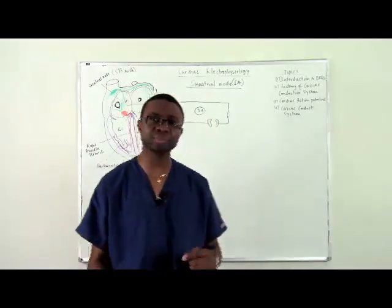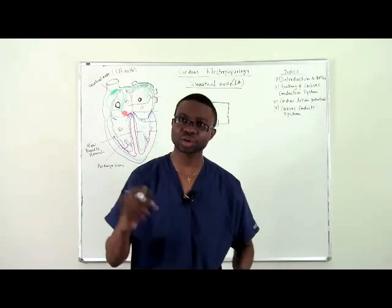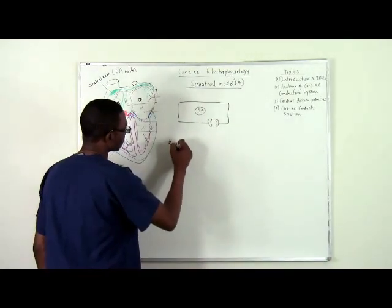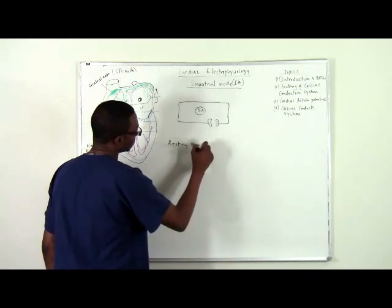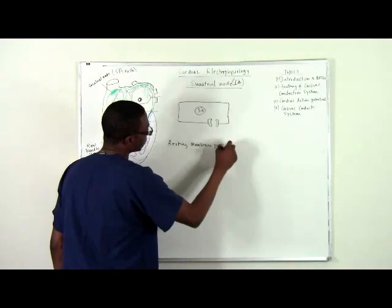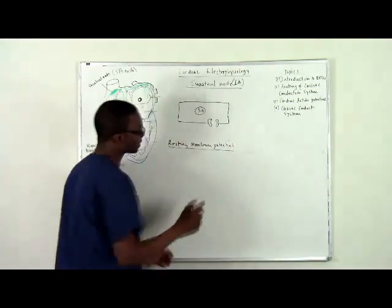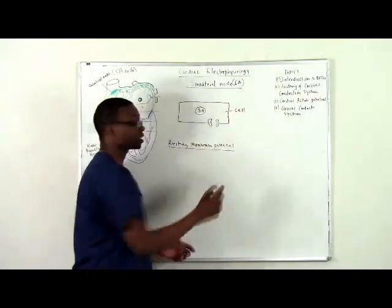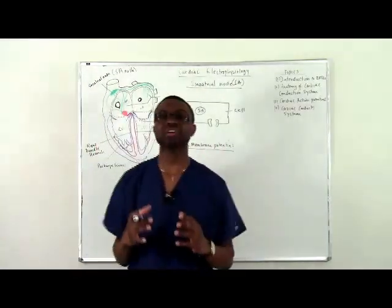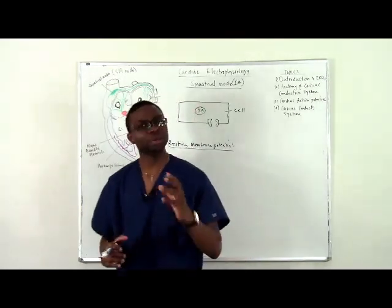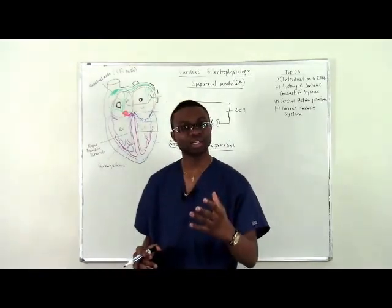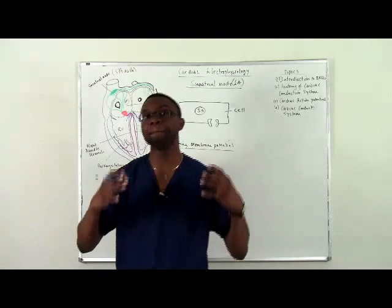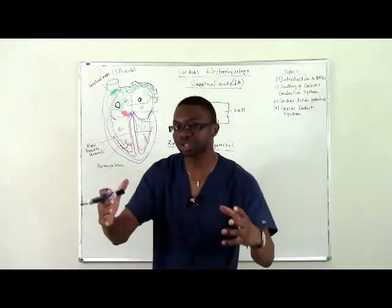What is the resting membrane potential of a cell? Let's talk about the definition. The membrane of a cell at rest has a potential. Think of potential like this: if you're watching this video and you want to become a doctor, you have the potential to become a doctor. You're not a doctor yet, but you have the ability — the potential — to do something.